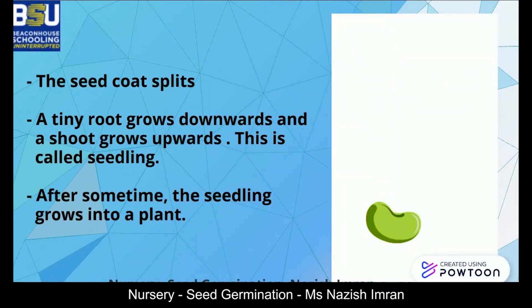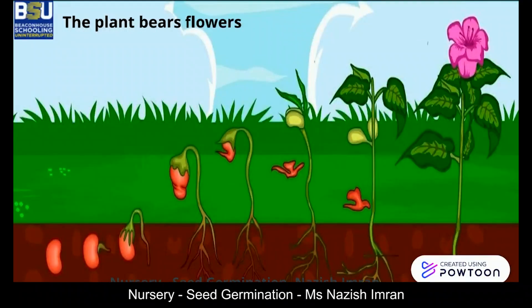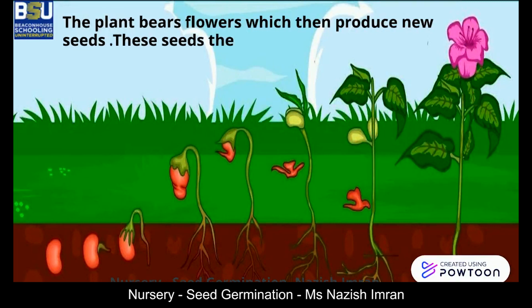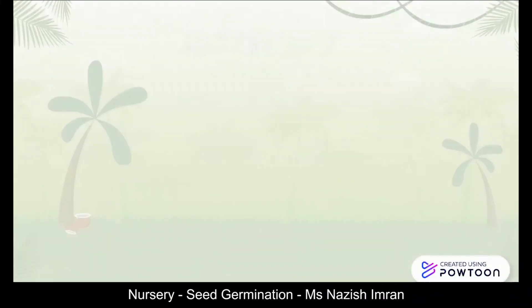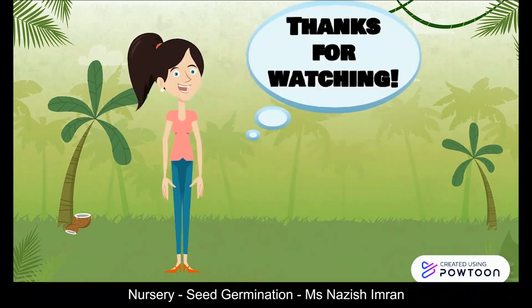This is called a seedling. After some time, the seedling grows into a plant. The plant bears flowers, which then produce new seeds. These seeds then turn into fruit with time. Hope you enjoyed the video — see you next time, bye bye!